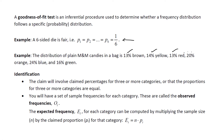Under identification, the claim will involve claimed percentages for three or more categories, or that the proportions for three or more categories are equal. You'll have a set of sample frequencies for each category. These are called the observed frequencies, or O sub i. The expected frequency, E sub i, for each category can be computed by multiplying the sample size n by the claimed proportion for that category, n times p sub i.